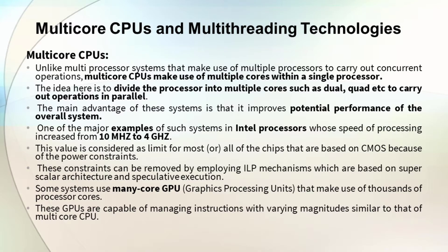Multi-core CPUs: the main idea is to divide the processor into multiple cores, such as dual, quad, etc., to carry out operations in parallel. The main advantage of this system is to improve potential performance. A major example is Intel processors, with speeds ranging from 10 MHz to 4 GHz.